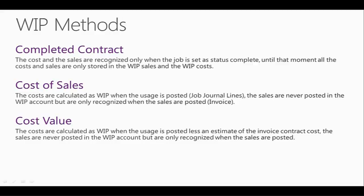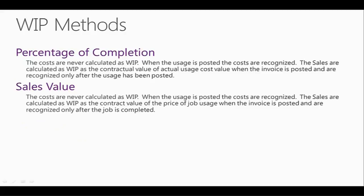In the database, these five methods are already stored and cannot be changed. The WIP methods are: Completed Contract — the cost and the sales are recognized only when the job is set to status Complete. Until that moment, all costs and sales are only stored in WIP sales and WIP cost. Cost of Sales — the costs are calculated as WIP when the usage is posted via job journal lines. The sales are never posted in the WIP account, but are only recognized when the sales are posted. Cost Value — the cost value is calculated as WIP when the usage is posted, less than the estimated invoice contract cost. The sales are never posted in the WIP account, but are only recognized when the sales are posted.